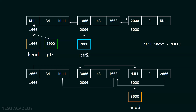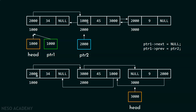After this, we will try to update the prev part of this node so that it can point to the second node. For this purpose, we will put the line of code: ptr1 prev equal to ptr2. You can see over here, this is now replaced by 2000, meaning this particular node is now pointing to the second node. This procedure is done using just ptr1.